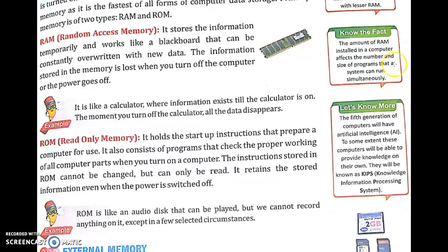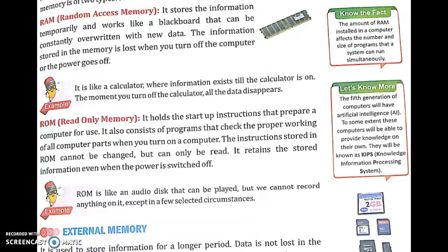Know the fact: the amount of RAM installed in the computer affects the number and size of programs that a system can run simultaneously. The fifth generation of computers will have artificial intelligence. To some extent, these computers will be able to provide knowledge on their own and will be known as KIPs — Knowledge Information Processing Systems.